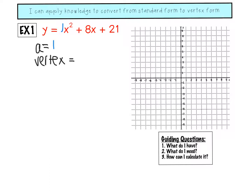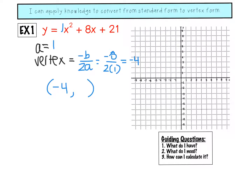To find the vertex, I'll use the formula: the opposite of b over 2a to find the axis of symmetry. That gives me the x-coordinate of my vertex, and then I'll plug that in to find the y-coordinate. So the opposite of b — b is 8, so negative 8 — over 2a, where a is 1, gives me negative 8 divided by 2, which is negative 4. So my vertex x-coordinate is negative 4. I plug negative 4 into the function and get y equals 5.